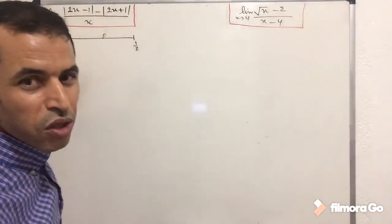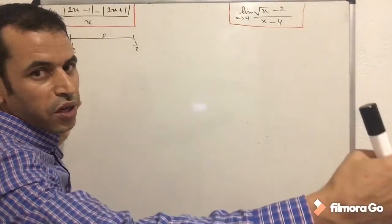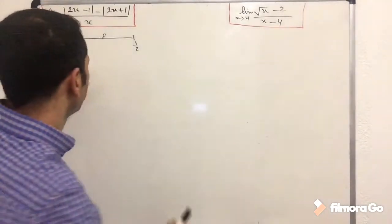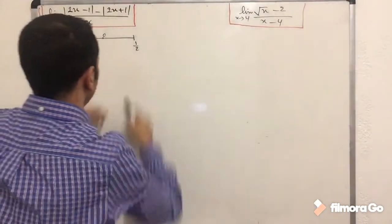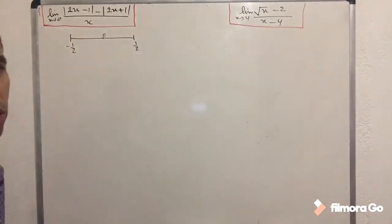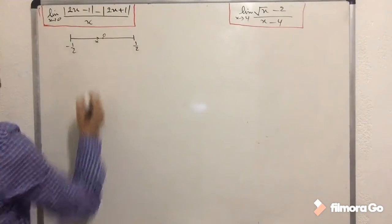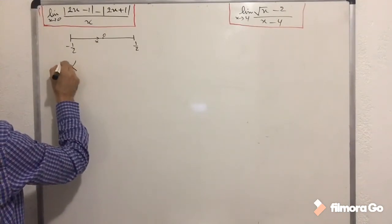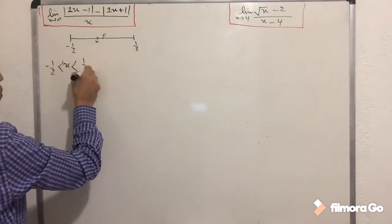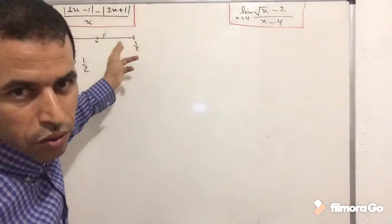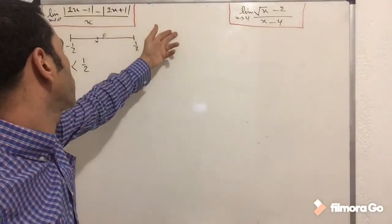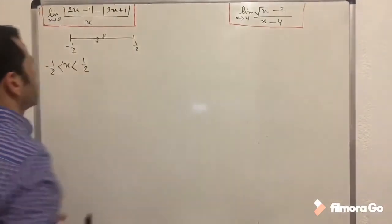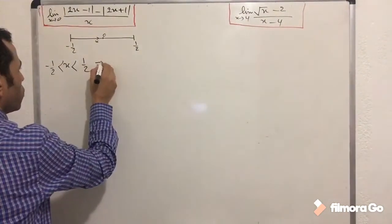We don't need x to infinity or minus infinity. We need x in a particular interval, in particular points. That's why I'm choosing this interval. Let's choose the right-hand side interval: x is between 0 and 1 over 2.